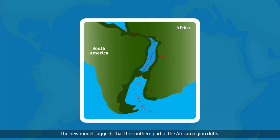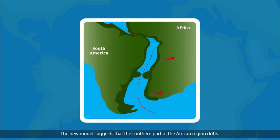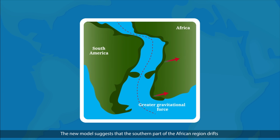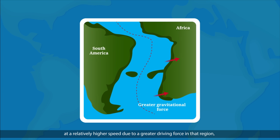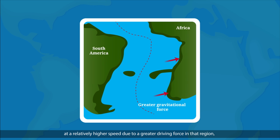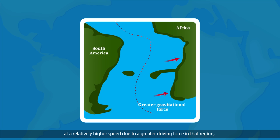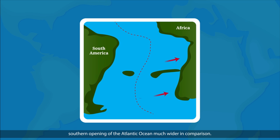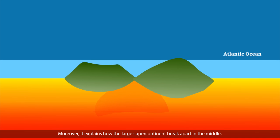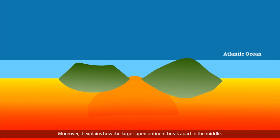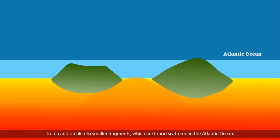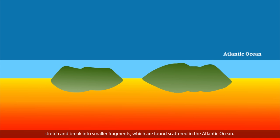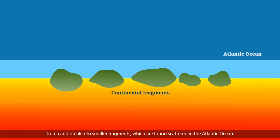The new model suggests that the southern part of the African region drifts at a relatively higher speed due to a greater driving force in that region, making the southern opening of the Atlantic Ocean much wider in comparison. Moreover, it explains how the large supercontinent broke apart in the middle, stretched, and broke into smaller fragments, which are found scattered in the Atlantic Ocean.